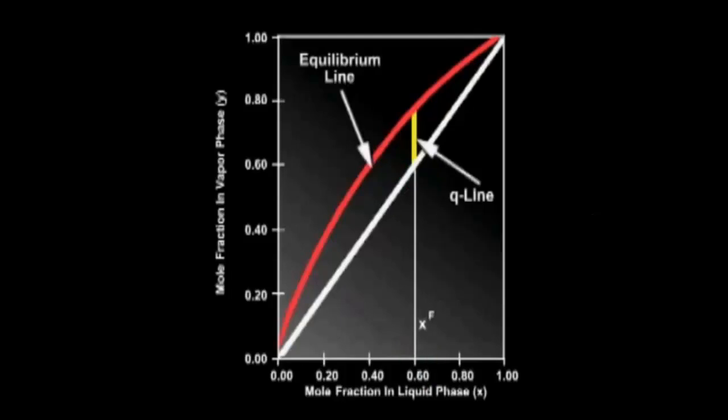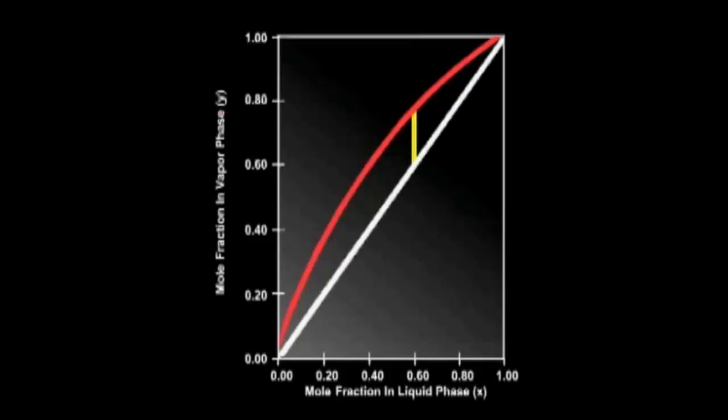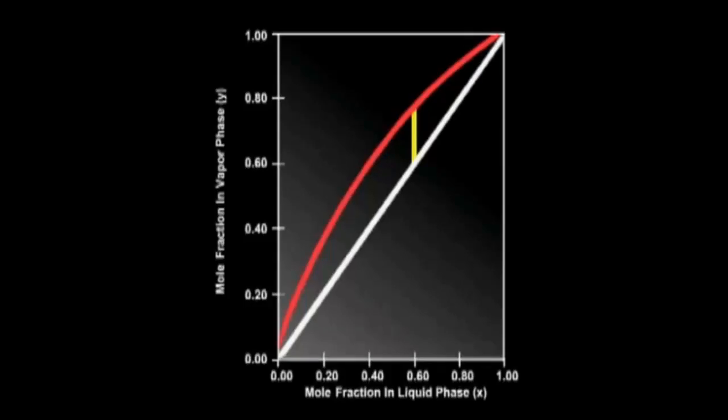We proceed by setting up the overall mass balance and the mass balance on the light component. From these two equations, we can solve for the two unknown streams, D and B. D is equal to 61.11 moles per second, and B is equal to 38.89 moles per second.